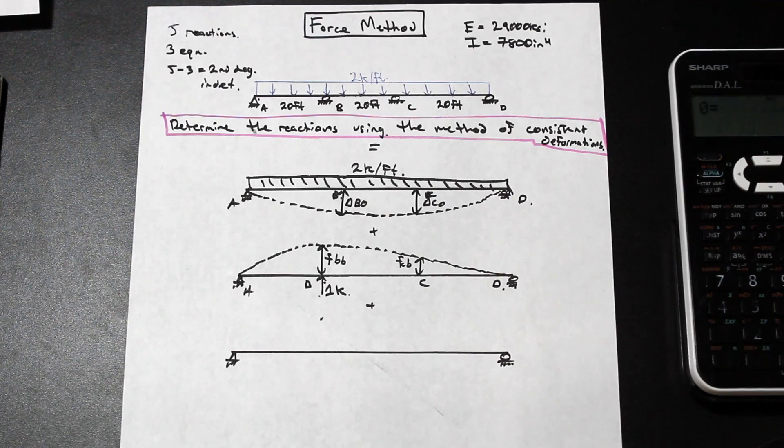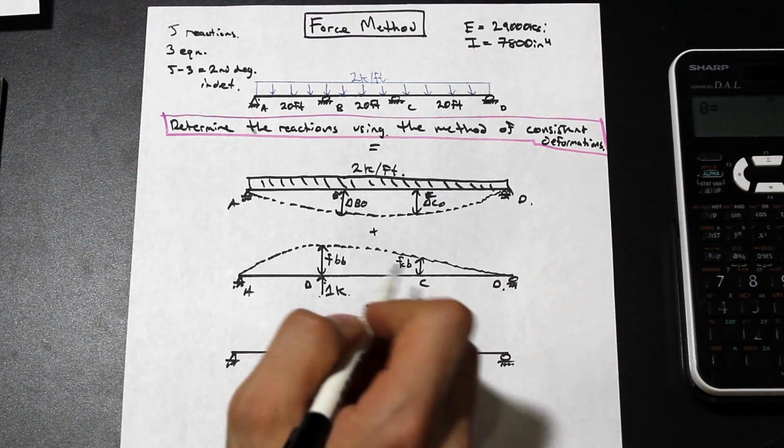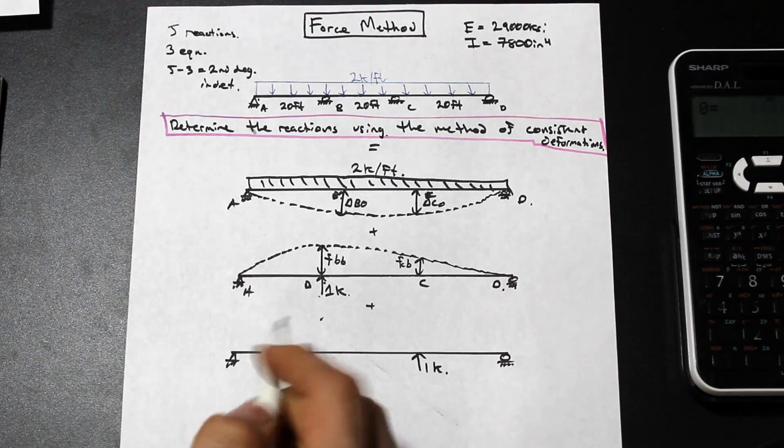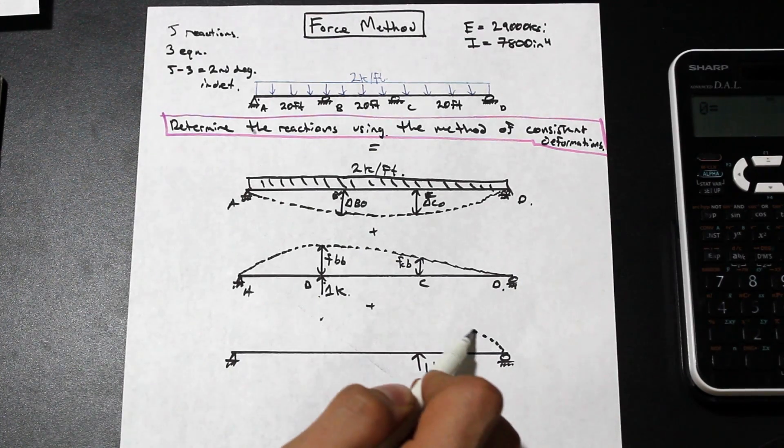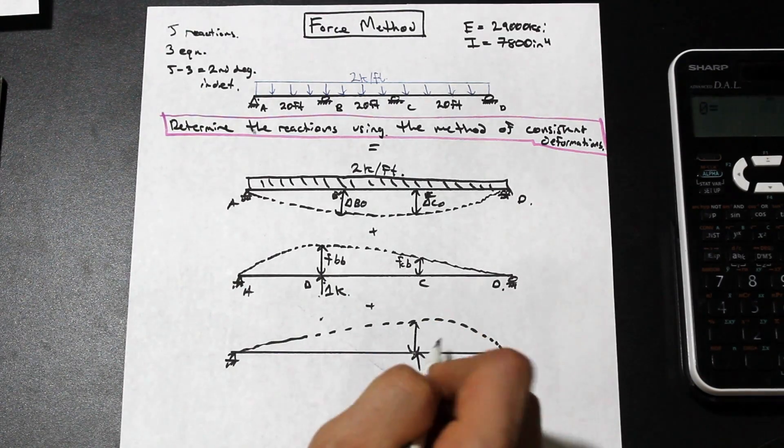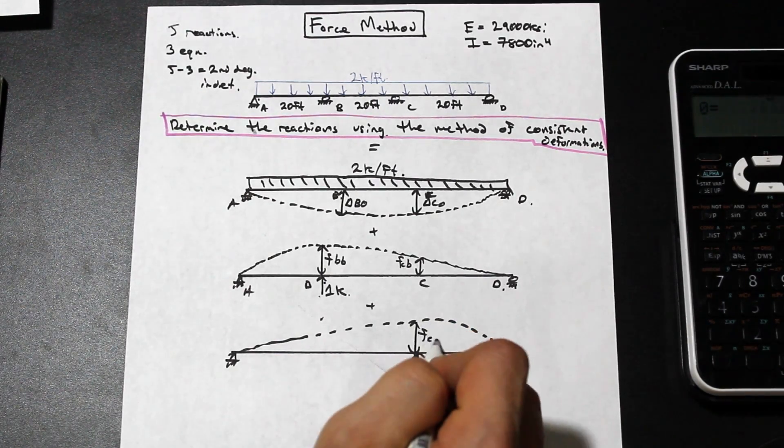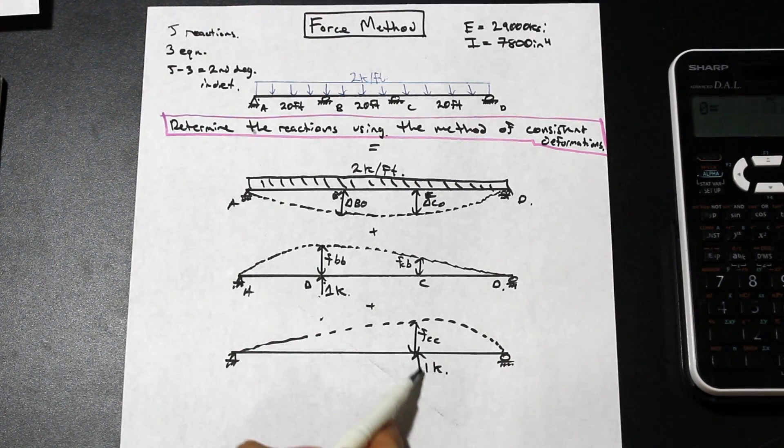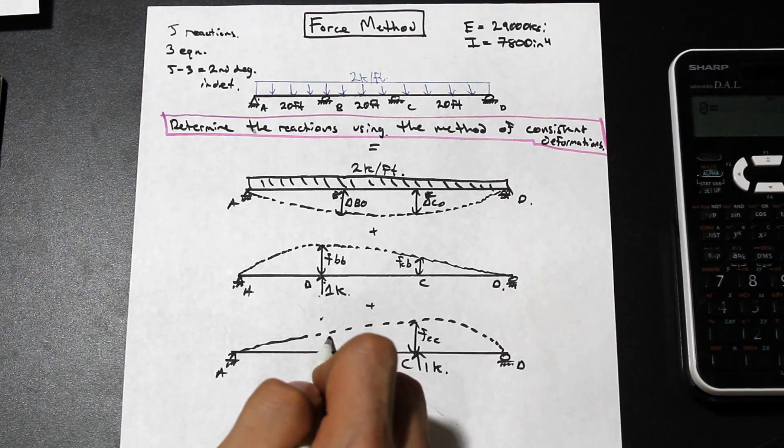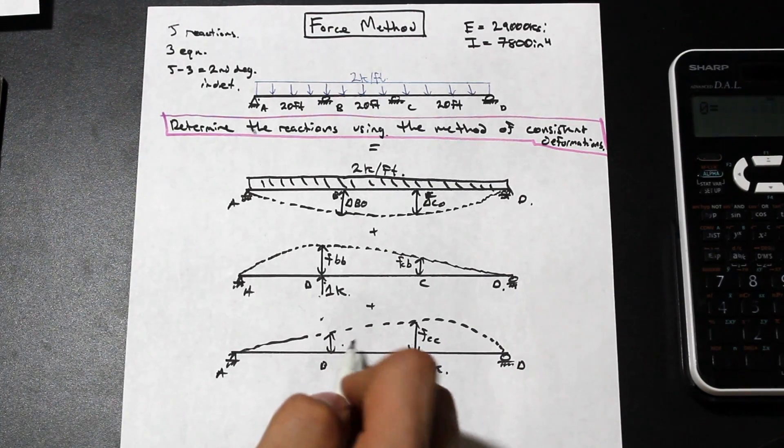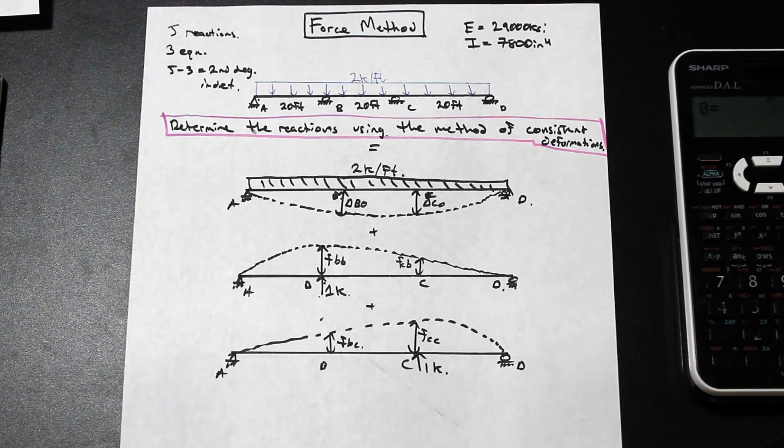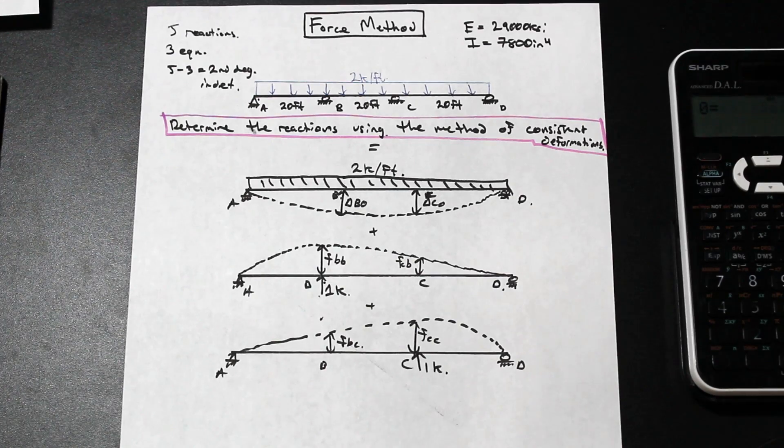Finally, we have the final unit load which we're going to apply at point C. So that's again 1 kip, and we're going to have a deflection that looks something like this now. And we're going to label this FCC, so the deflection at C with respect to the unit load at C. And we have FBC here, so the deflection at B with respect to the unit load at C.